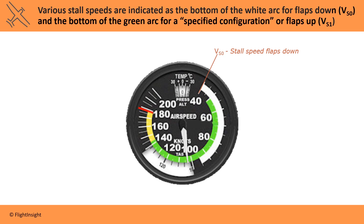Another stall speed refers to when the airplane is in what's called a specified configuration — sort of a vague term. Usually this means the flaps are up, so it can be thought of as a takeoff stall speed. It's indicated at the bottom of the green arc. This is VS1.